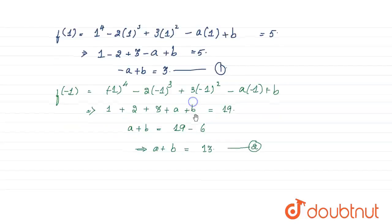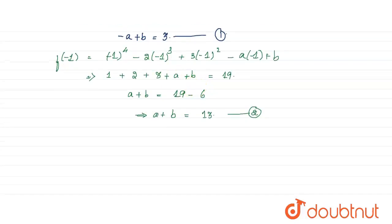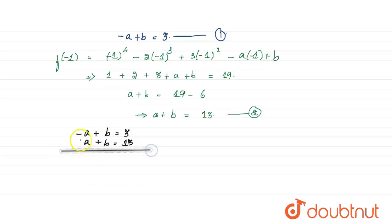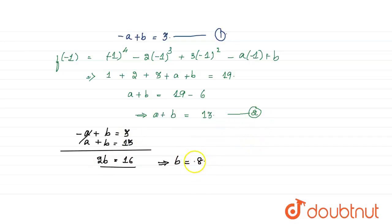We have our two equations: minus a plus b equals 3, and a plus b equals 13. Adding both equations, minus a and plus a cancel, giving 2b equals 16, so b equals 8. Substituting b equals 8 into the second equation: a plus 8 equals 13, so a equals 5.